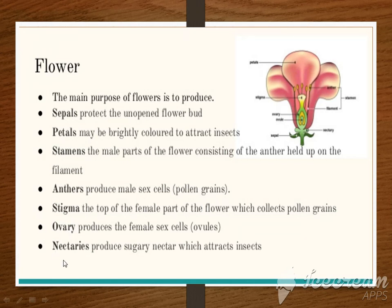Stigma — these are the female parts. The stigma is at the top of the female part of the flower, and it collects pollen grains. As you can see in this picture, this is the female part. This most important part is called the stigma. The work of the stigma is to collect pollen grains.